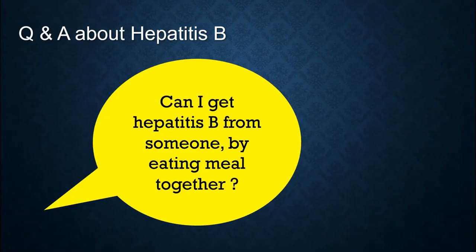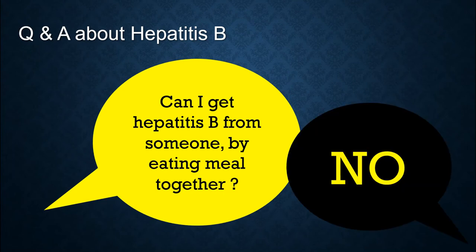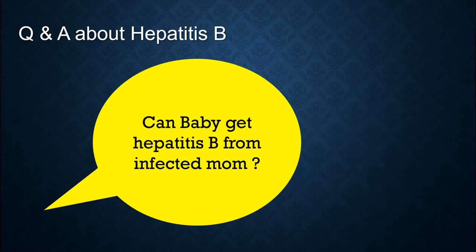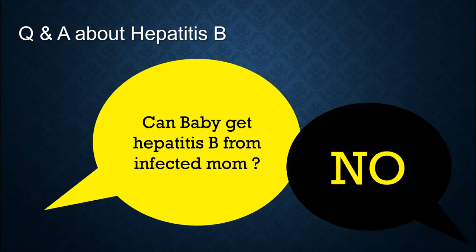Let's check out some misconceptions or questions about hepatitis B. Can I get hepatitis B from someone by eating a meal together? The answer is no — hepatitis B is transmitted through blood contact, not food. Can a baby get hepatitis B from an infected mom through breastfeeding? No, it is through blood contact. However, it is possible if the mom has a hurt nipple, but the mom should wait until she is healed in that case.